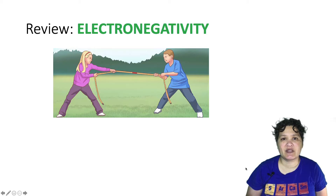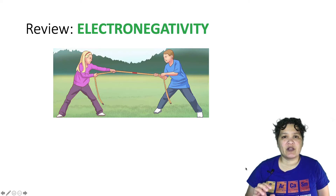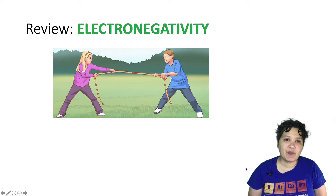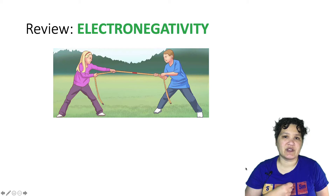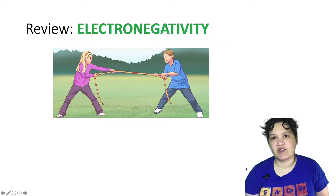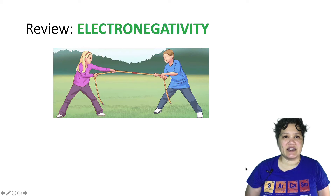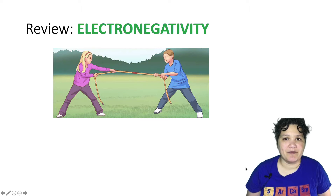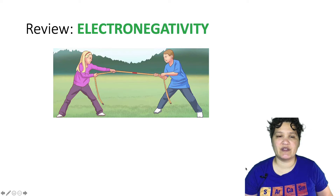Let's start with a couple of review items. Electronegativity is a periodic property where you have two nuclei sharing electrons as part of a bond. Electronegativity tells you how hard each nucleus pulls on those electrons. We often depict this as a tug of war — you could have relatively equally matched contestants, or someone who works out versus someone who doesn't, and you know which one is probably going to win.